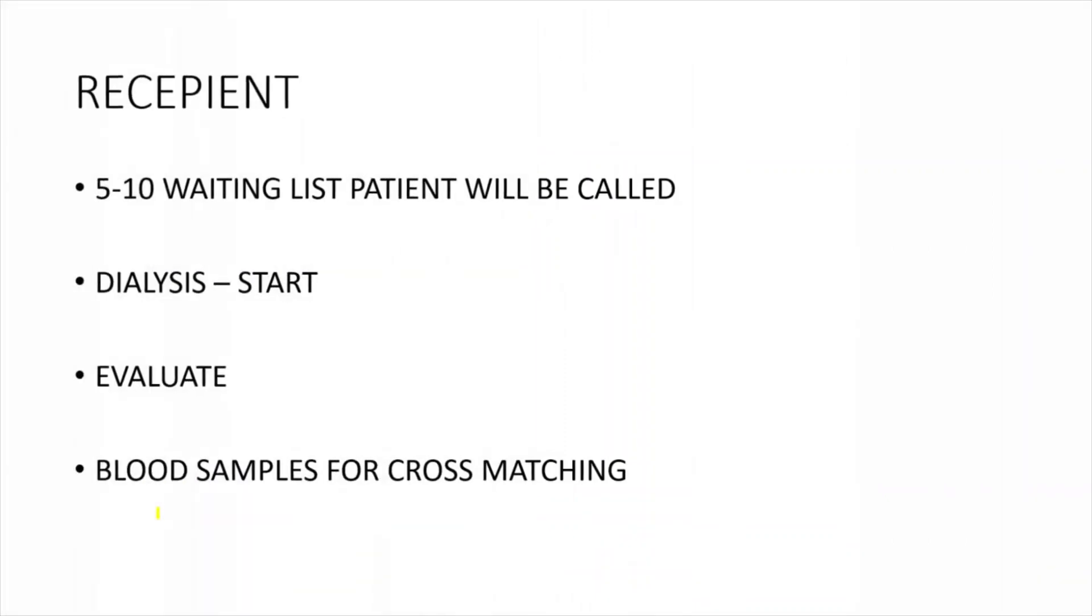Whenever a call comes for availability of a cadaver kidney, the first step is to check the blood group. You have to call around 10 waiting list patients from the cadaver program list. The number of patients called varies from center to center. In our center, we usually call around 10 patients. For example, if the cadaver kidney available is blood group A, we will call around 10 patients from the waiting list who are blood group A.